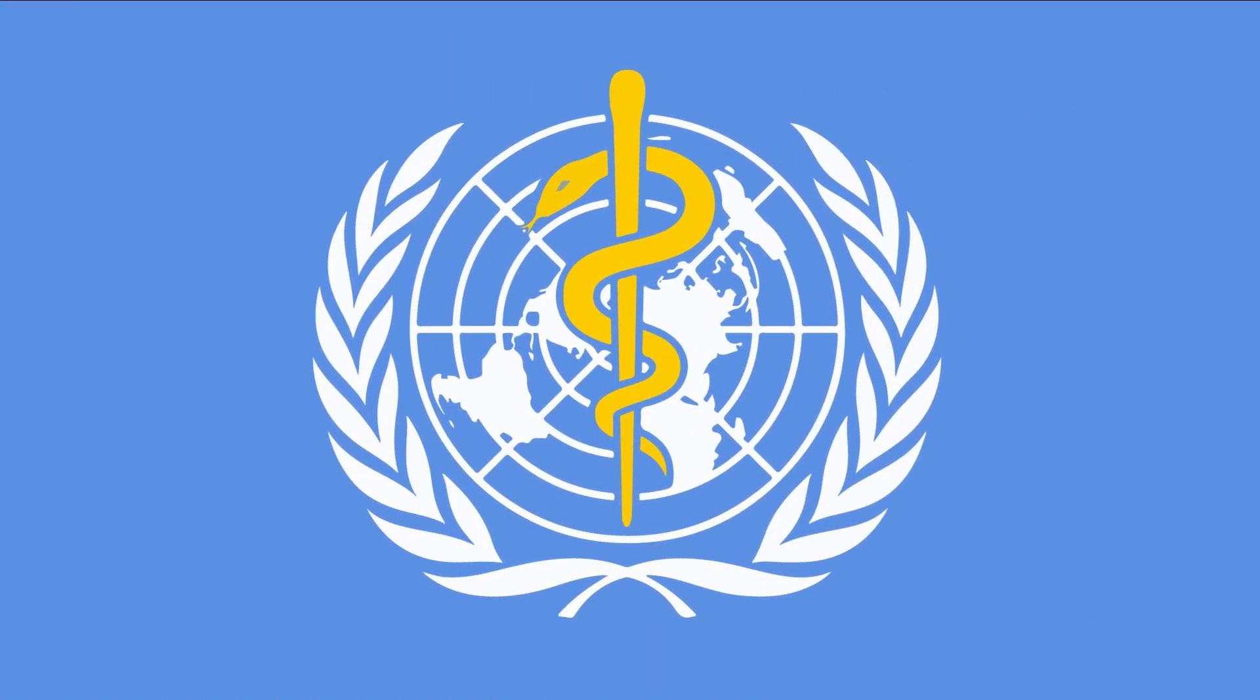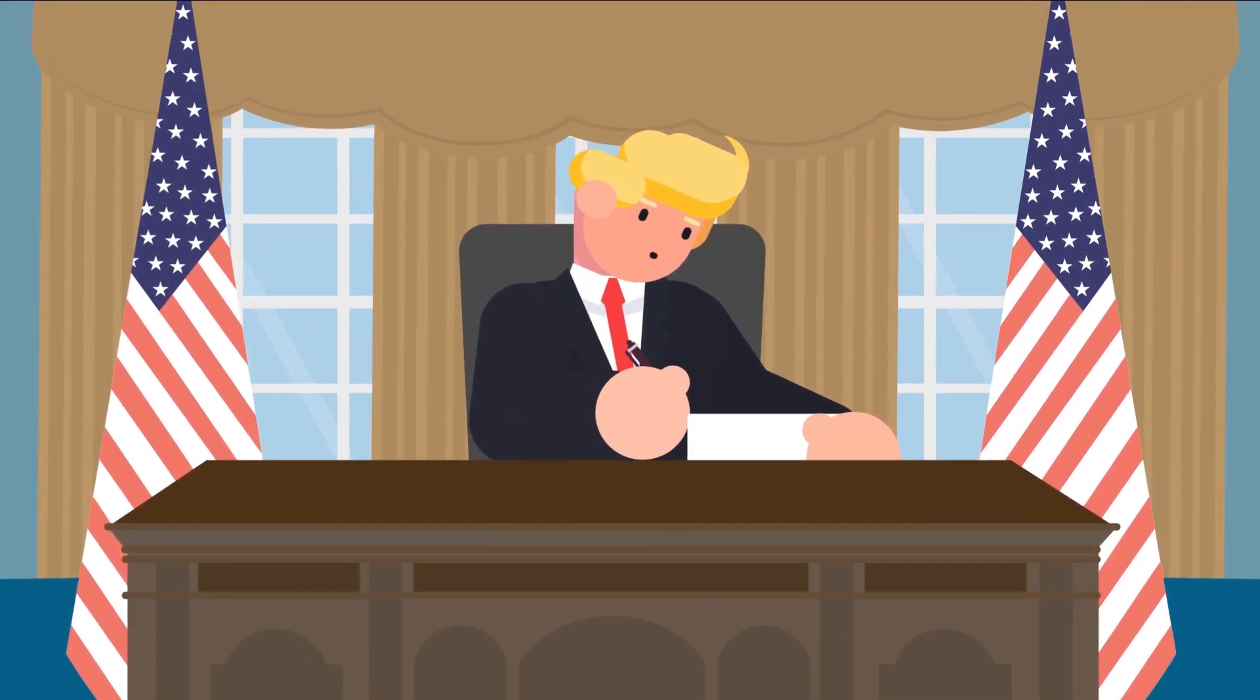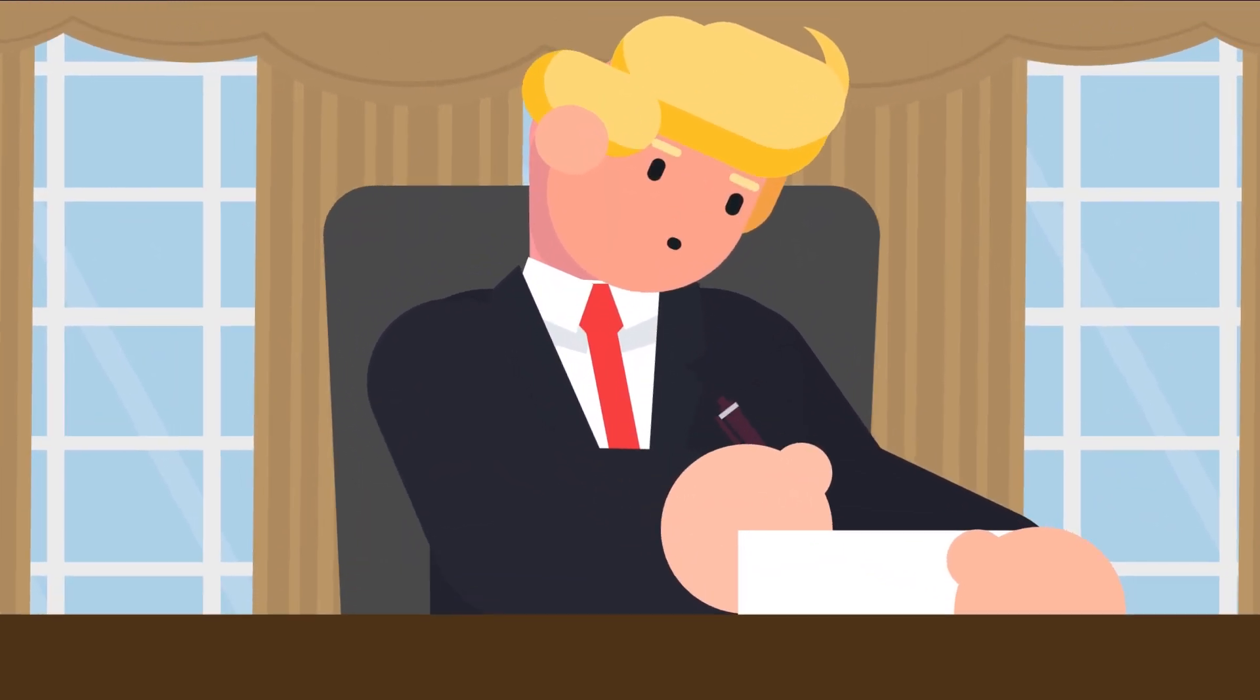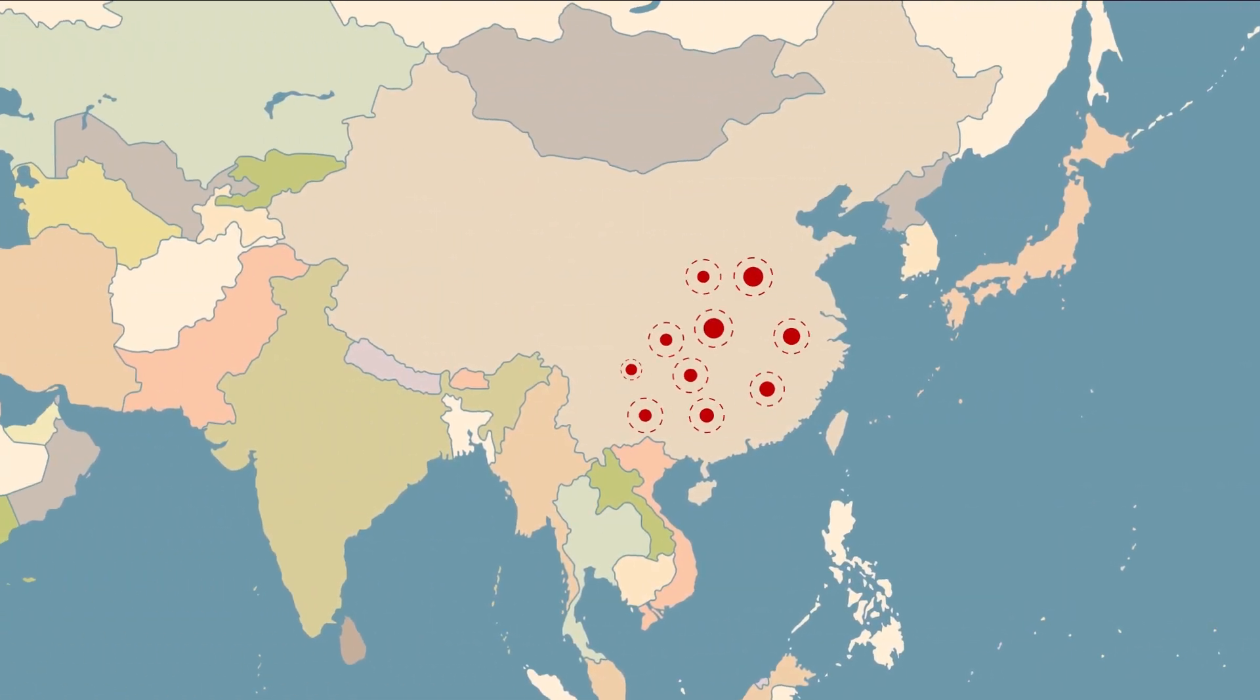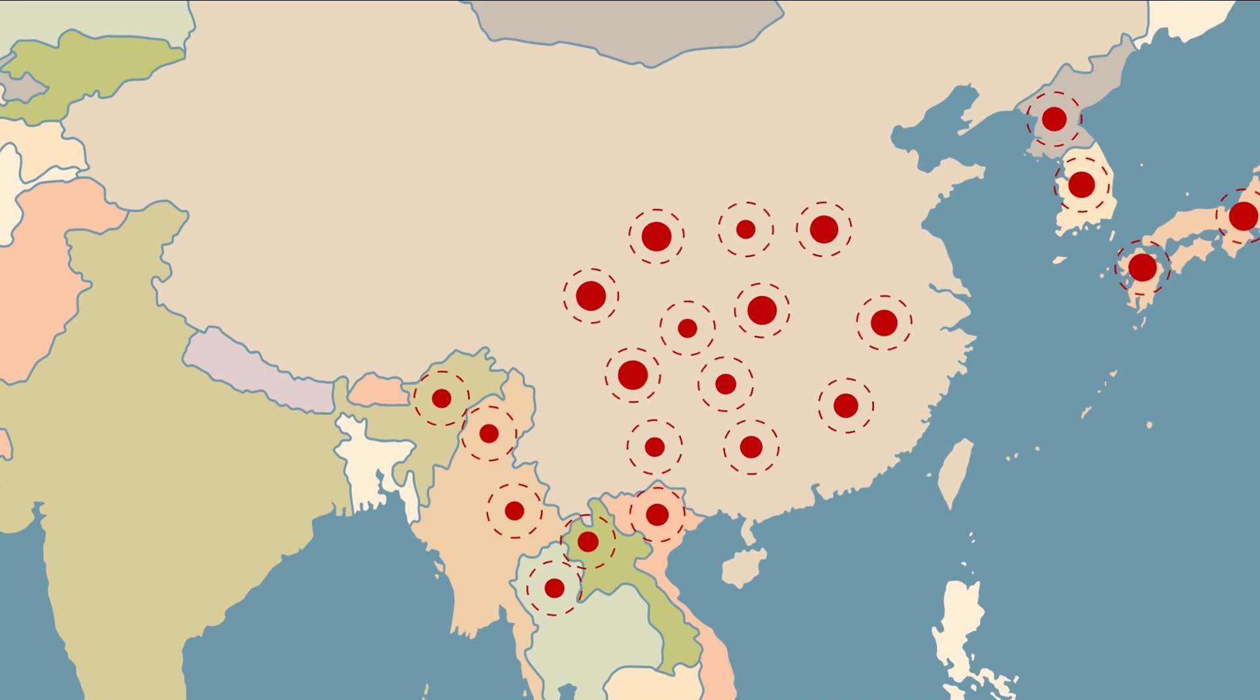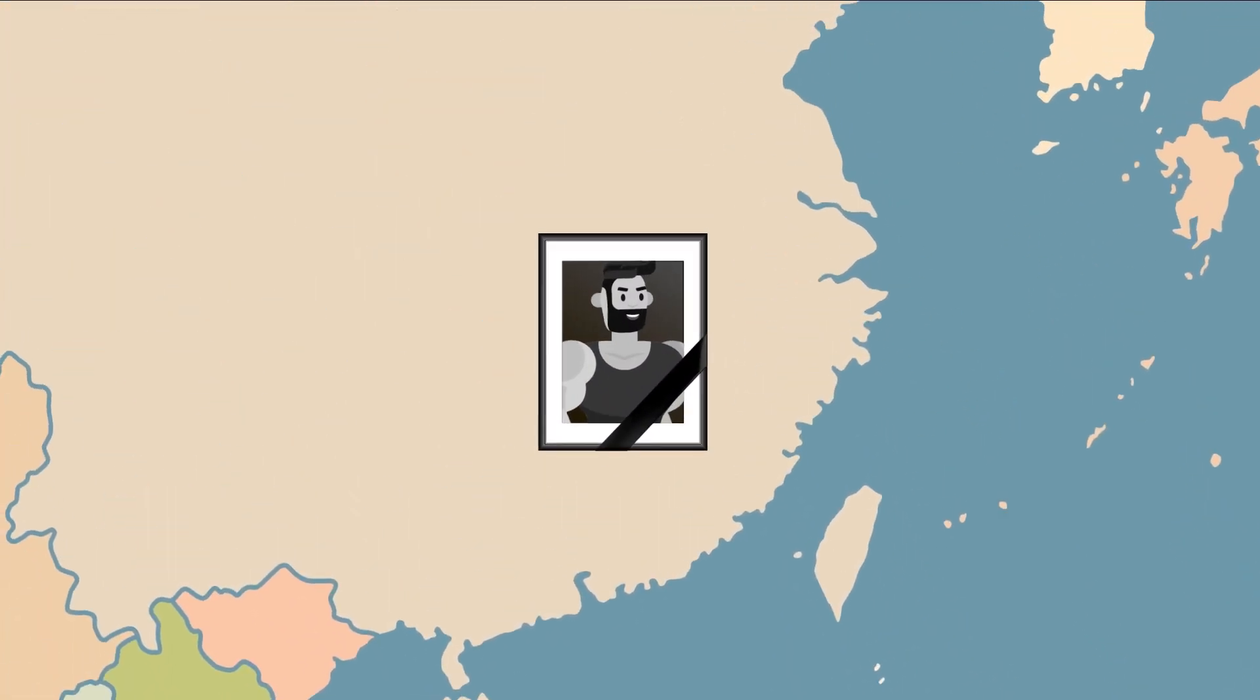By the end of the month, the World Health Organization had declared a public health emergency, and President Trump had issued a ban on traveling to the US for those who had been in Wuhan up to two weeks prior to traveling. The first ten days of February saw infections spike both inside and outside China, as well as the first deaths in the Philippines and the death of a United States citizen in Wuhan.